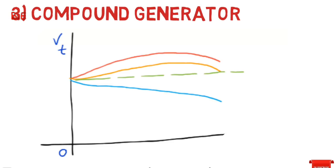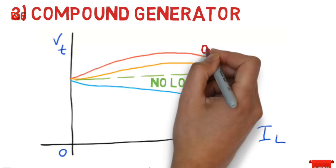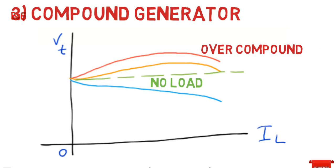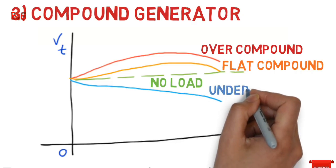Now let's look at the compound generator. The figure shows the characteristics of the compound generator. If the series winding ampere-turns are adjusted so that the terminal voltage remains constant even as current increases, the generator is called a flat compound generator. And if the winding has fewer turns than required for flat compounding, it is called an under-compound generator.